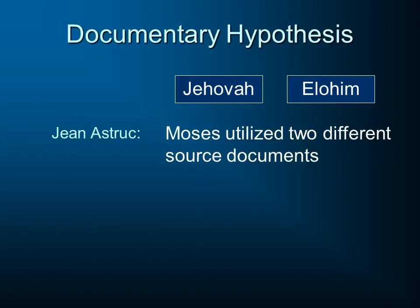It was noted by Jean Astroch back in the 1700s that this was so, and he theorized that Moses perhaps utilized two different source documents. There's nothing wrong with seeing the scriptures as having source documents. For example, in the book of Joshua chapter 10 we read of the book of Jasher, where Joshua actually quotes a small section of that book, which we no longer have. There were times when biblical writers could cite a book that's not part of the Bible. It may well be that Moses had some original documents he used in writing Genesis, though for Exodus through Deuteronomy he was present for most of that and wouldn't need source documents.